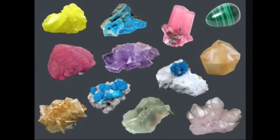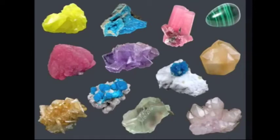On Earth there are over 3,000 varieties of minerals, some of which can be seen here. They come in a wide variety of shapes, sizes, and physical properties. Humans use minerals in everything from food to personal care, construction, and technology. In fact, there are at least 30 minerals used in the computer you use to watch this video.